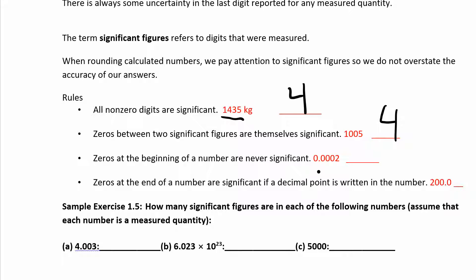Zeros at the beginning of a number are never significant, no matter what — even if there's a decimal place present, it doesn't matter. You start counting your significant figures at the first non-zero digit. So a number like 0.0002 only has one significant figure. You can rewrite this in scientific notation as 2 times 10 to the negative 4, and then all those leading zeros disappear. The beginning zeros never matter.